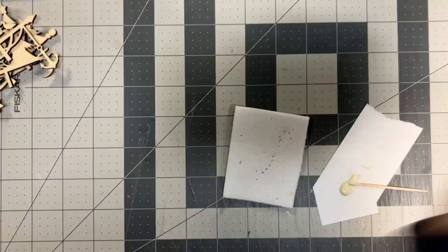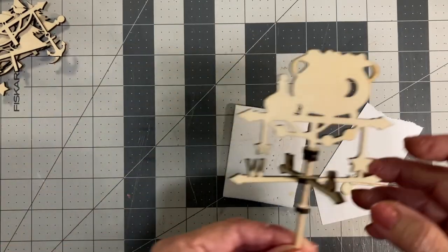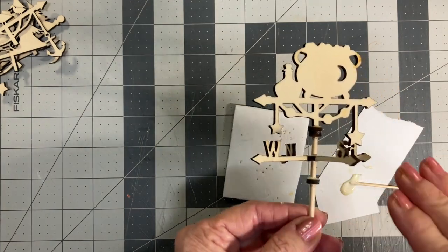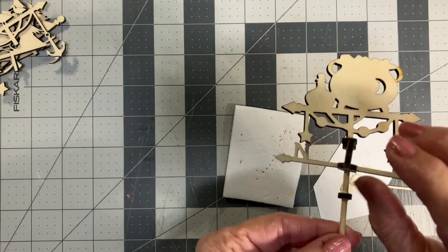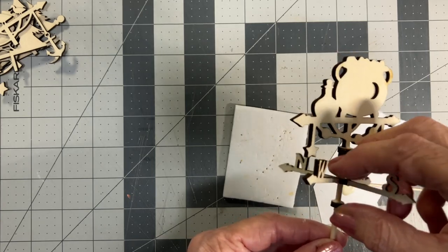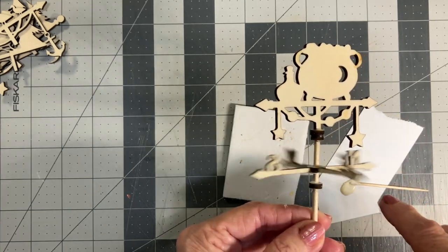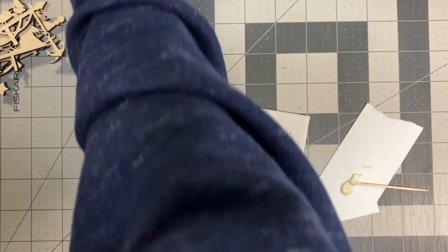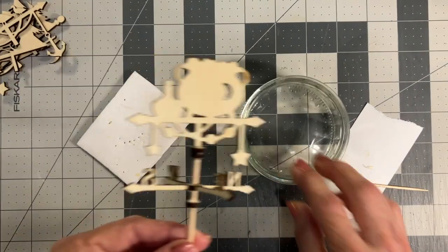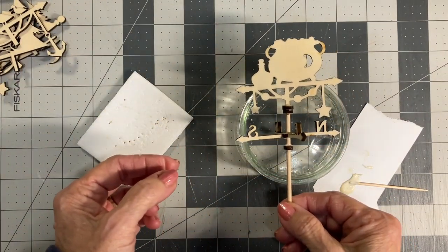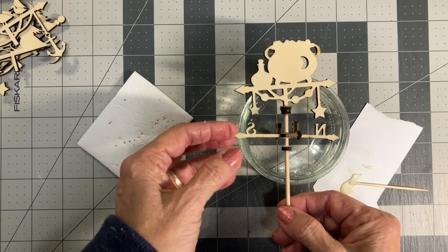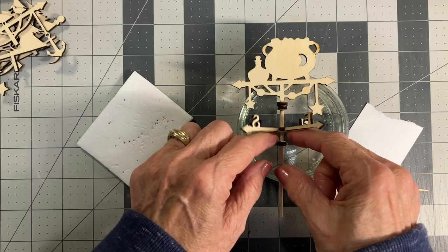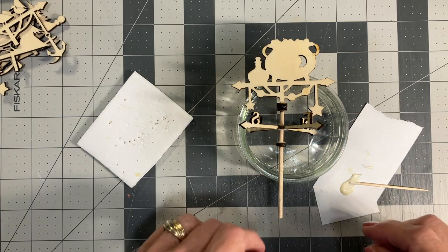Now if you want your weather vane to turn, you would leave the north, south, east, and west part alone so that it can spin and eventually just let it fall down on top of that last circle. If you don't want it to turn, you can go ahead and add a little bit of glue in there and push it straight down onto that last circle and that will stabilize it. Just make sure that your north, south, east, and west are going the correct direction.